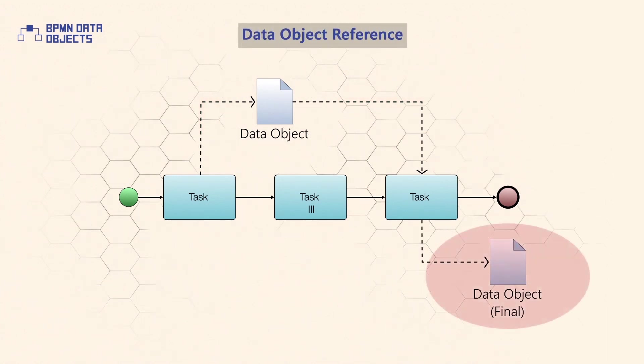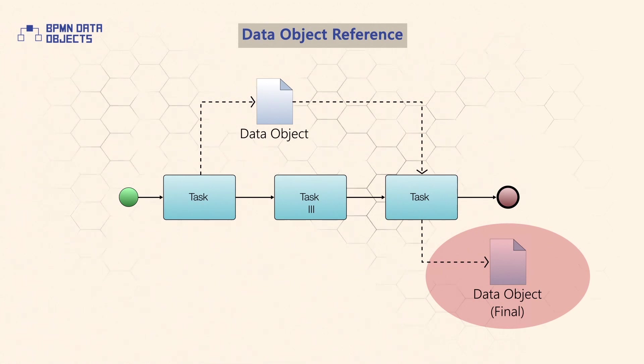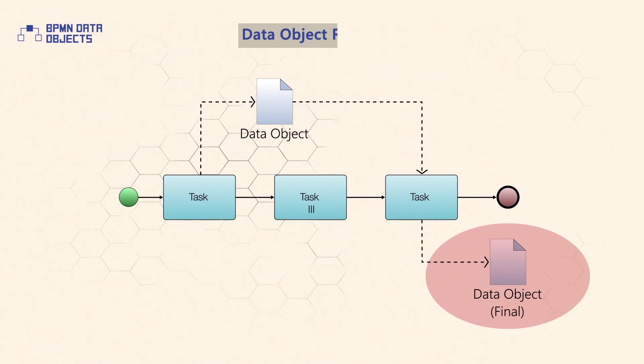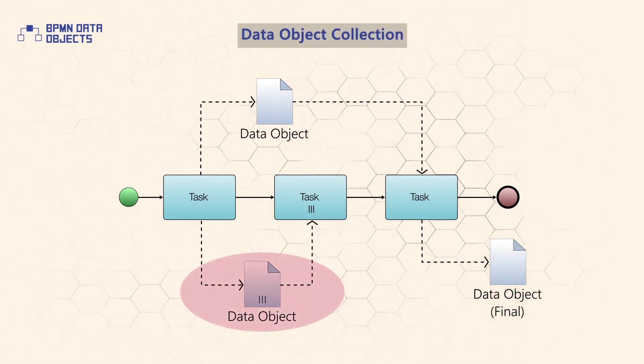Data object references are a way to reuse data objects in the same diagram. They can specify different states of the same data object at different points in a process. A special type of a data object is data object collection, which represents an array of data object elements.